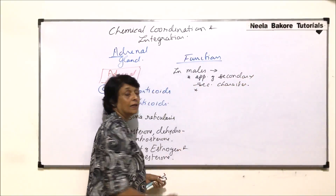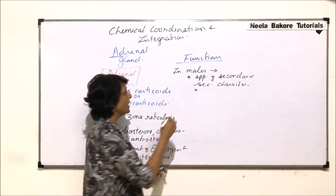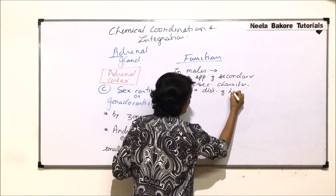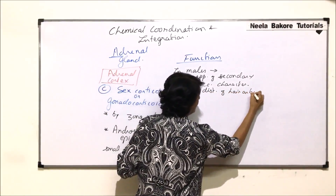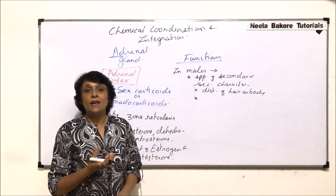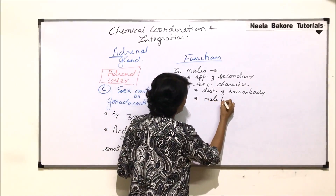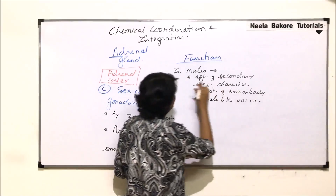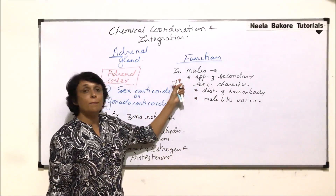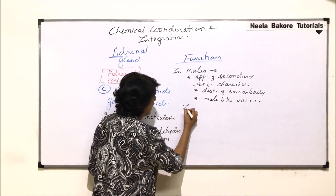In males, secondary sex characters include the male-like distribution of hair pattern — hair on the body — and deepening of voice, which is also known as the male-like voice. These are the secondary sex characters which appear in males due to sex corticoids.